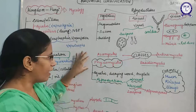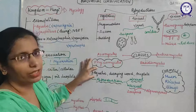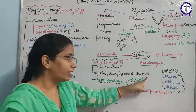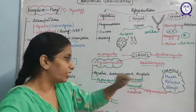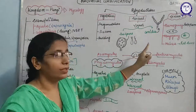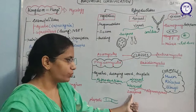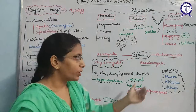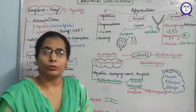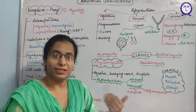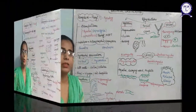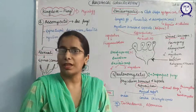Phycomycetes include all those fungi found in aquatic conditions — water availability is required — and they can grow on decaying wood also. These mainly have hyphae that are aseptate, meaning coenocytic or multinucleate condition. Reproduction occurs both sexually — following plasmogamy, karyogamy, and meiosis — and asexually by formation of zoospores and aplanospores. Examples include Mucor, Rhizopus, and Albugo. Spores may be produced inside or outside the sporangium.